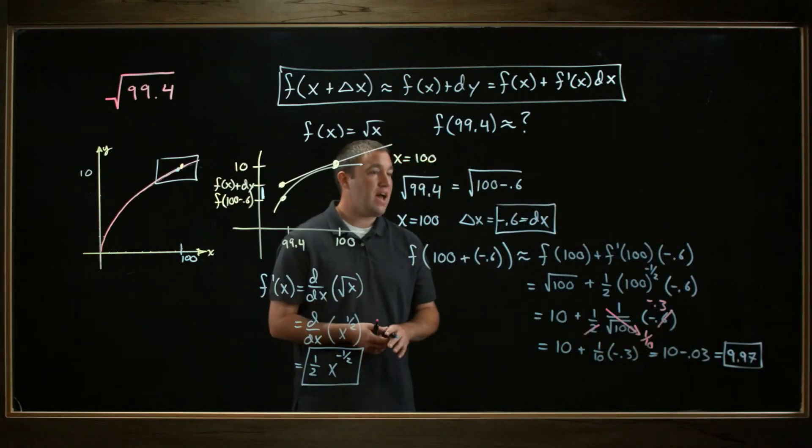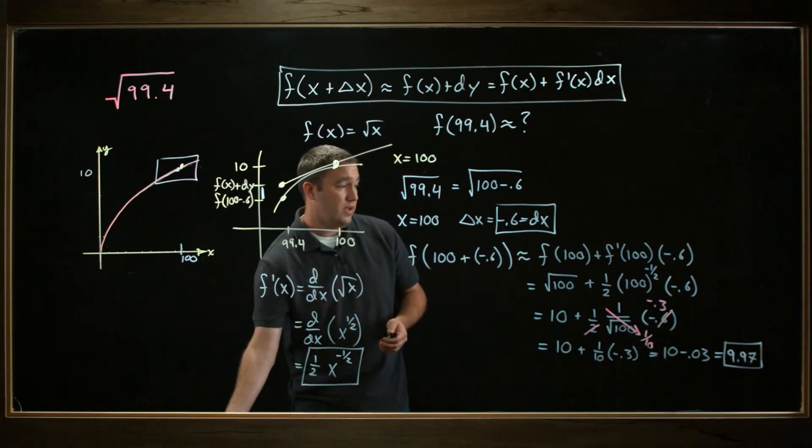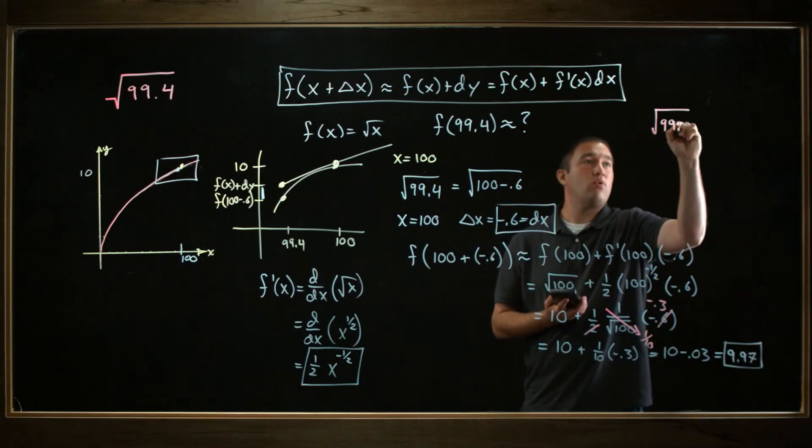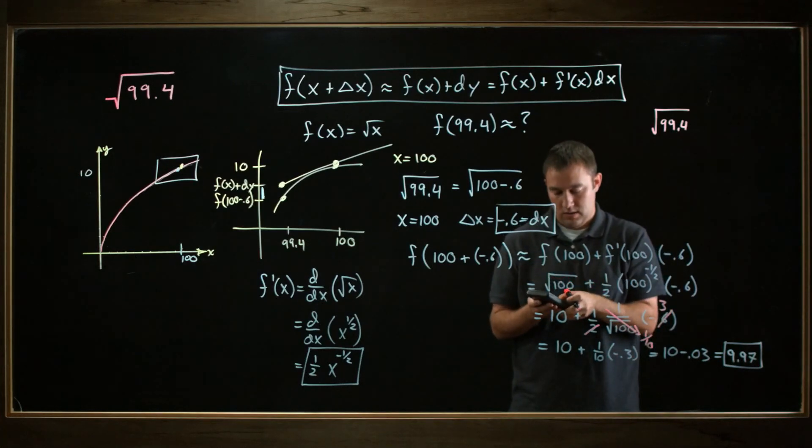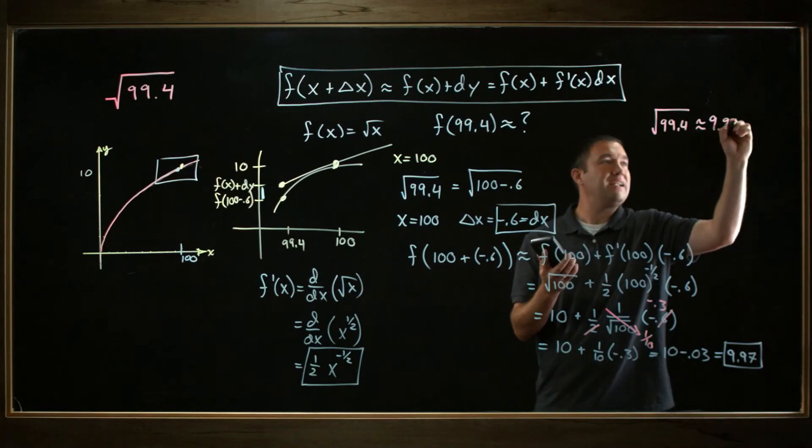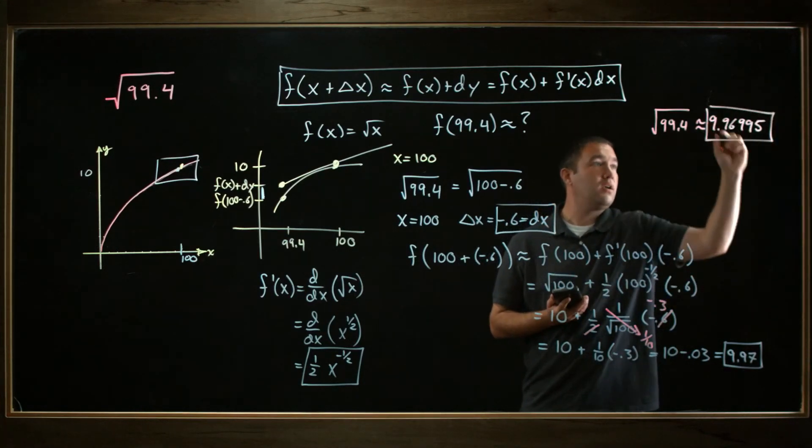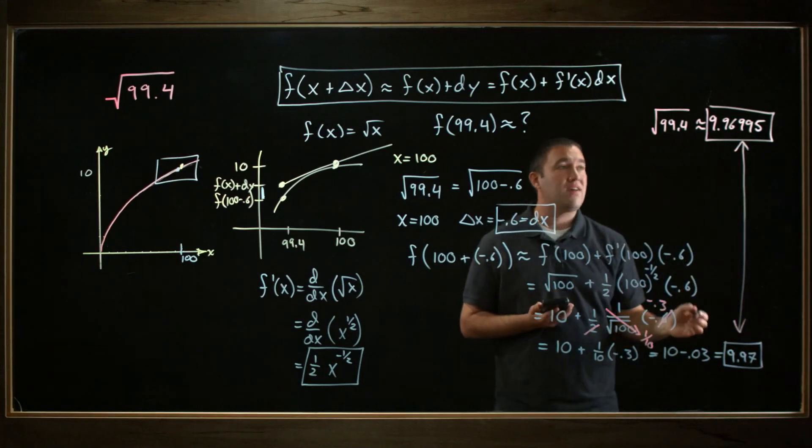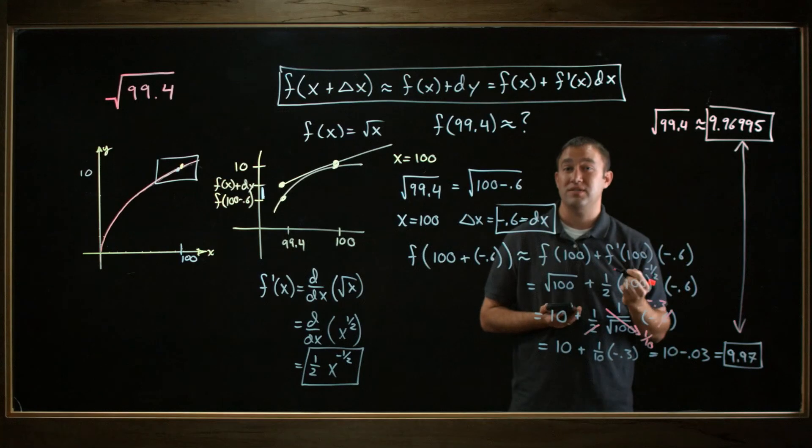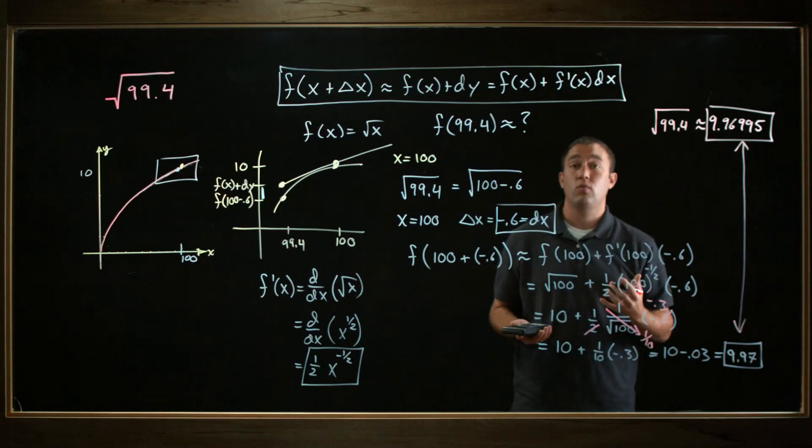So I did all this calculation, and I got my approximation was 9.97. But since we do have calculators, I could see how close was I to the actual answer. If I take the square root of 99.4 and plug that into my calculator, my real answer approximated by the calculator turns out to be something like 9.96995. Look at how close these two values are: 9.97 and 9.96995. I've got to go 0.00005 to get the difference. This is a really good approximation of my actual value, and that's why before we had use of calculators, this was a really good way to get really accurate answers.